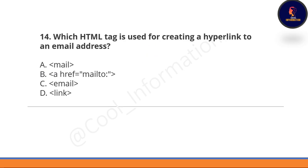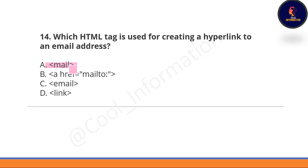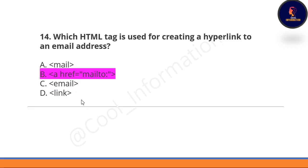Next question: which HTML tag is used for creating a hyperlink to an email address? Option A is the mail tag. Option B is the 'a' tag with the attribute href equal to mailto. Option C is the email tag. Option D is the link tag. The correct option is option B.